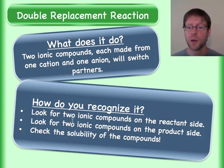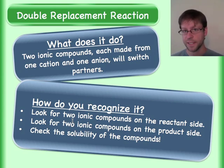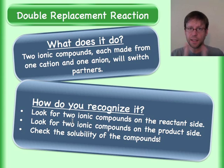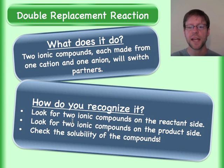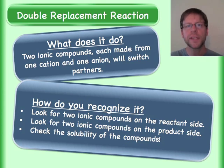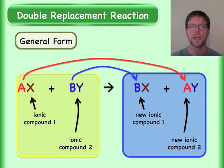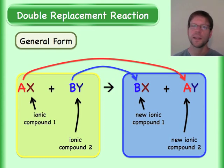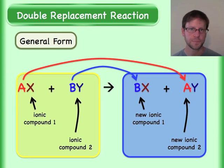These are super easy to look at and identify — look for two ionic compounds on the reactant side; there's going to be two on the product side as well. The cation-anion combos will be switched on the different sides. This is important: check for the solubility of all the different compounds, because usually something is going on there, otherwise it wouldn't really be a reaction.